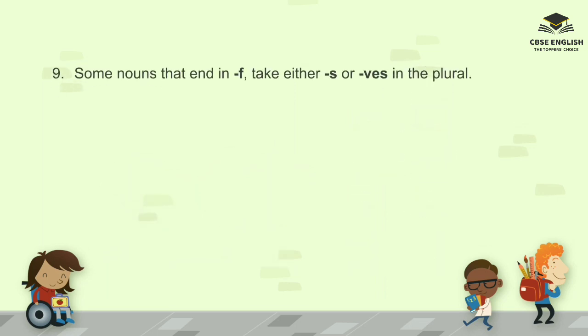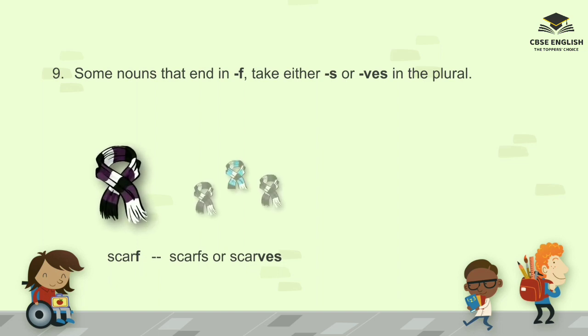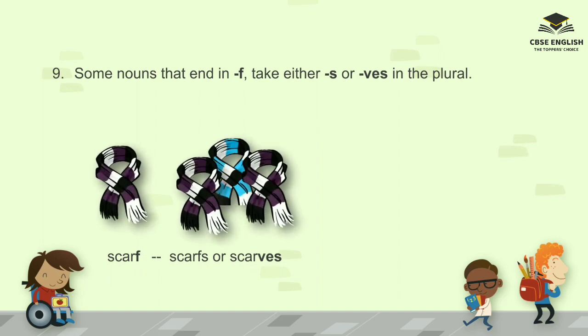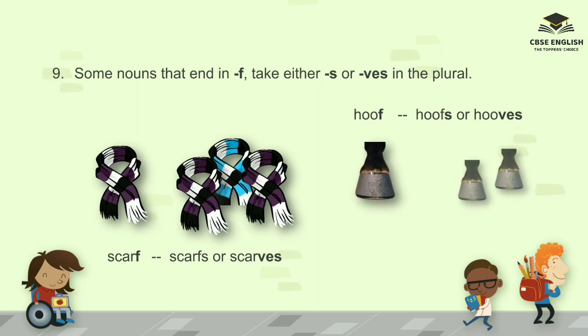Number nine: some nouns that end in F take either S or VES in the plural. For example: scarf — scarfs or scarves; hoof — hoofs or hooves.